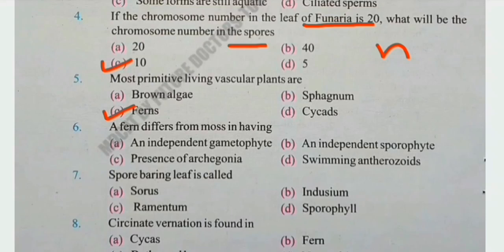Number 6: A fern differs from moss in having — in ferns the sporophyte is dominant, so the right answer is B. In mosses, the gametophyte is dominant.